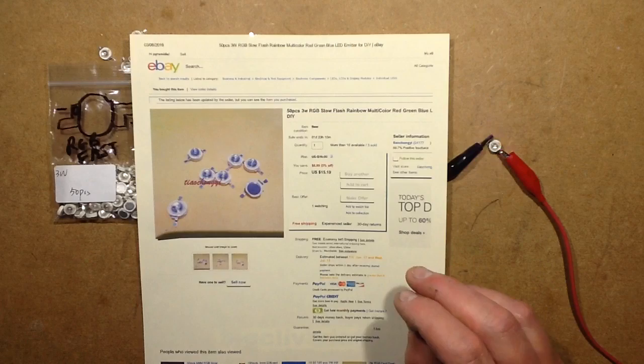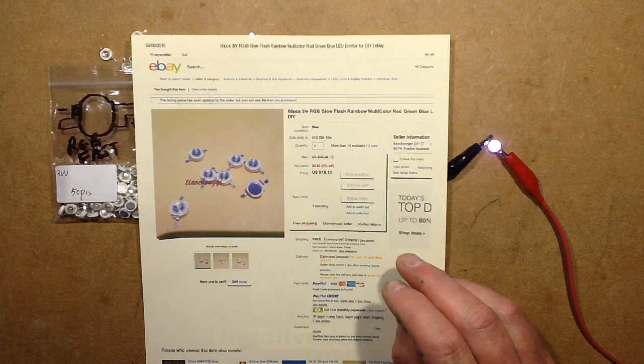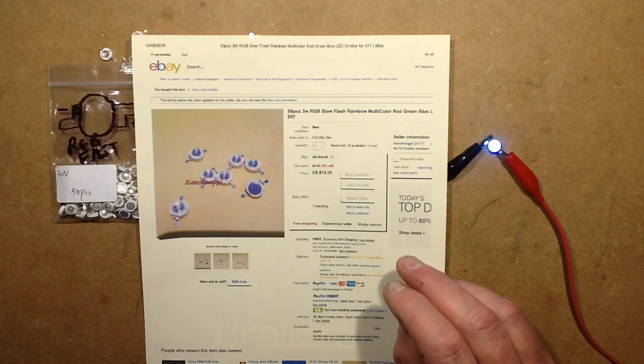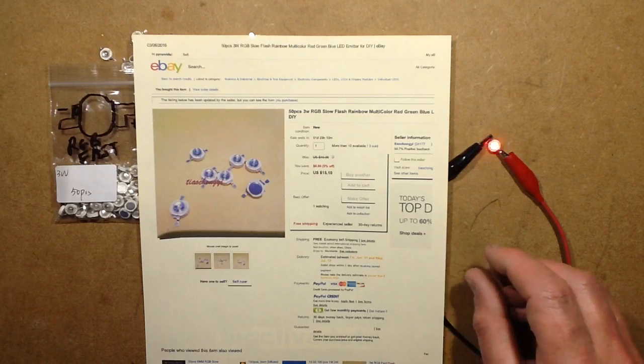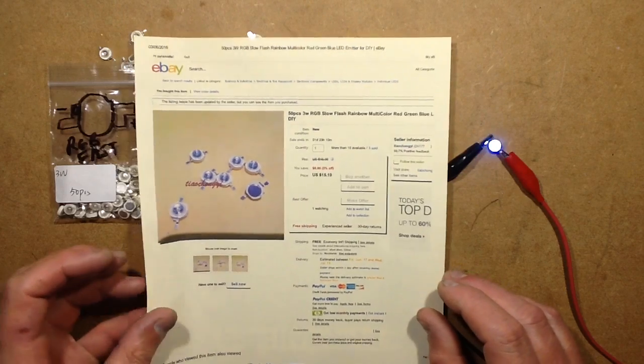But it came from a seller called Tia Chongyi, T-I-A-O-C-H-O-N-G-Y-I. And they cost about $15, which is about 10 British pounds for 50.